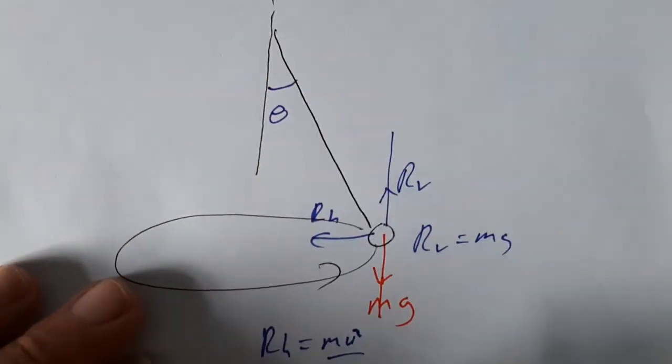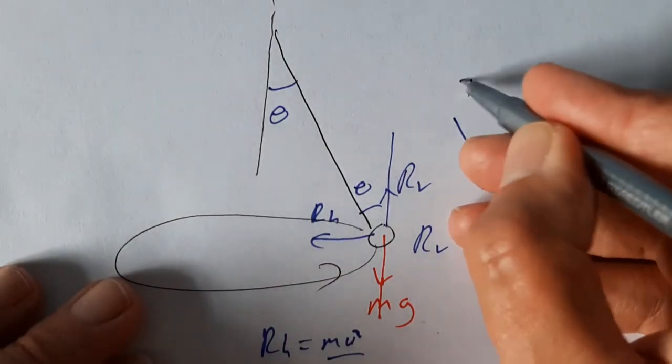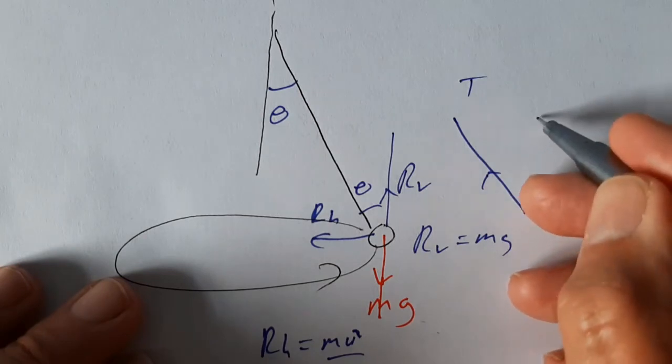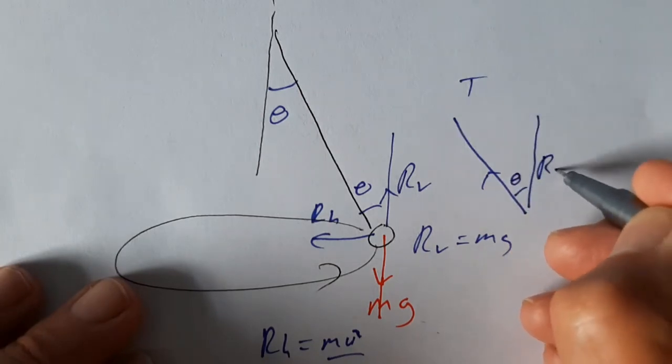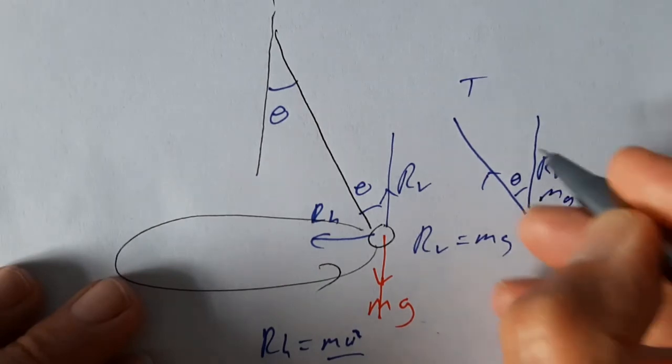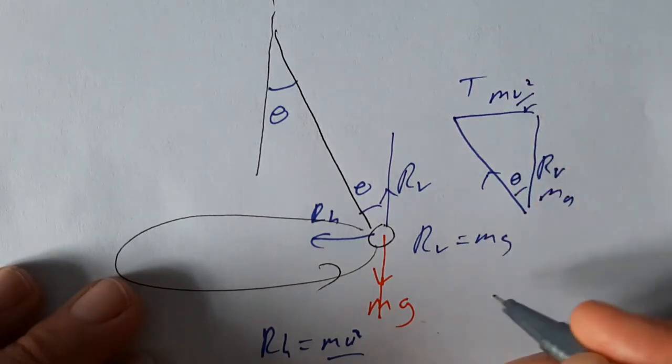And we've got - if that's the angle of the pendulum, then that would come in here as theta. So we'd have the tension will be here. There's theta. There's Rv, which is mg. Sorry about the messages coming through on my phone. Here's mv squared over r.